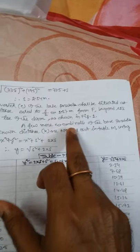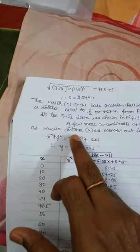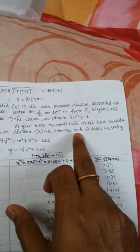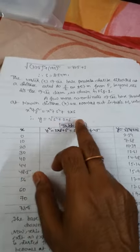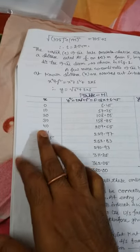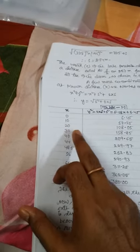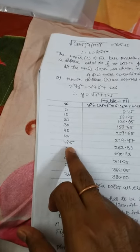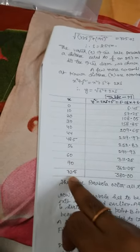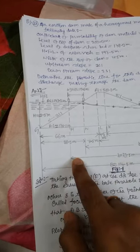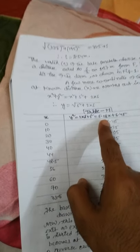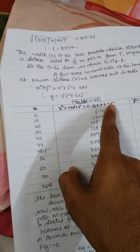A few more coordinates of the base parabola at known distances x are worked out in table 1.1, using x square plus y square equals x square plus 2xs. The y equals s square plus 2xs. Table 1.1.